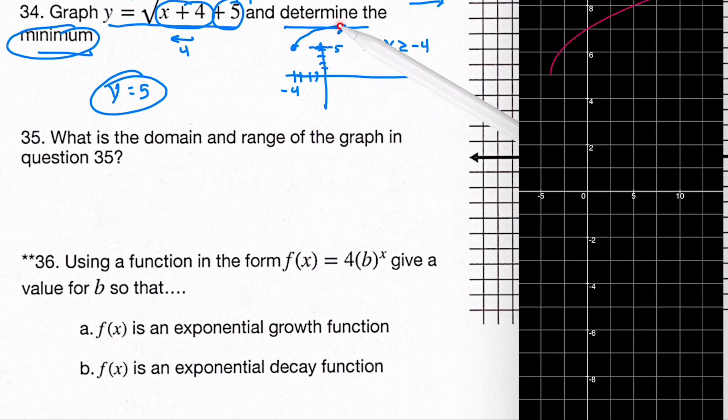And get rid of this little extra line there if I could. This just starts here at negative 4 or 5 and goes up and to the right, so the domain and range of the graph in 34.